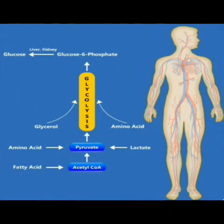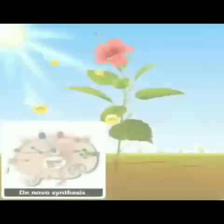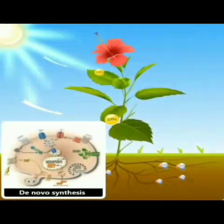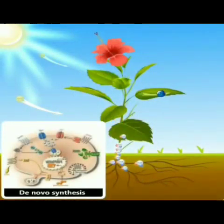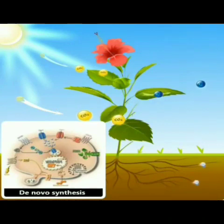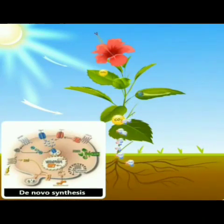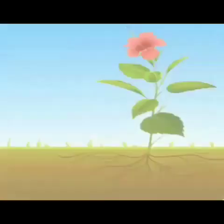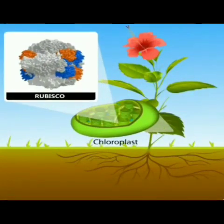Plants produce the necessary amino acids from minerals de novo, and thereby produce different kinds of proteins. The enzyme RuBisCO, present in plant chloroplasts, is the most abundant protein found in nature.